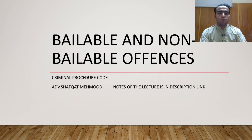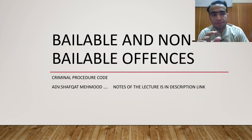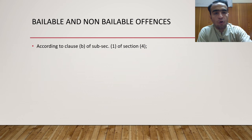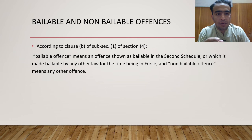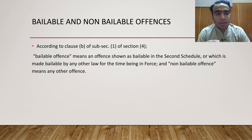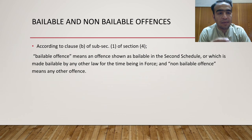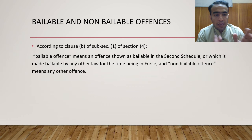Before going towards the explanation, we will go through the definition provided under Section 4 of the Criminal Procedure Code. According to clause (b) of sub-section (1) of Section 4, bailable offense means an offense shown as bailable in the Second Schedule, or which is made bailable by any other law for the time being in force, and non-bailable offense means any other offense. اس کا مطلب یہ ہے کہ CrPC کے Second Schedule میں جن offenses کو bailable declare کیا گیا ہے وہ تمام offenses bailable ہیں، یا کسی اور قانون میں کسی offense کو bailable declare کیا ہے وہ offense بھی bailable ہے، اور ان کے علاوہ جو دیگر offenses ہیں وہ non-bailable offenses ہیں۔